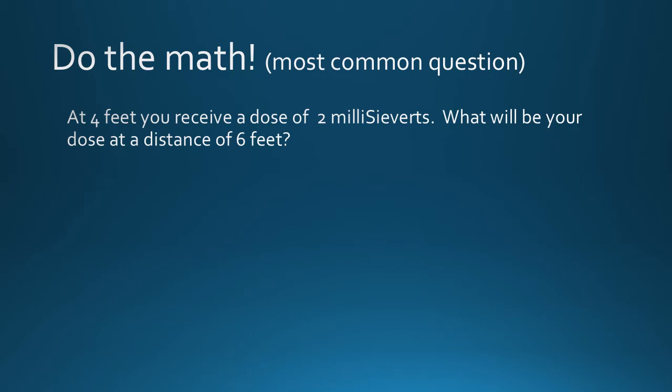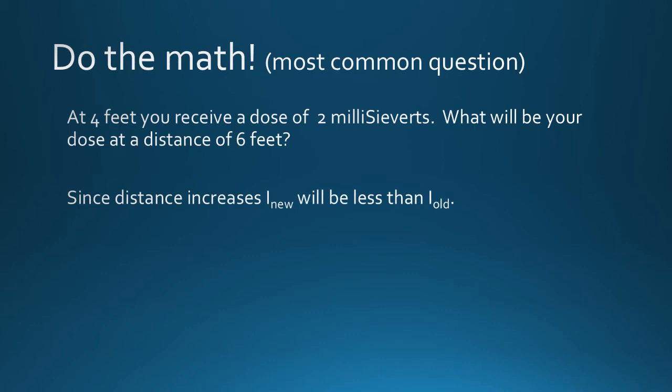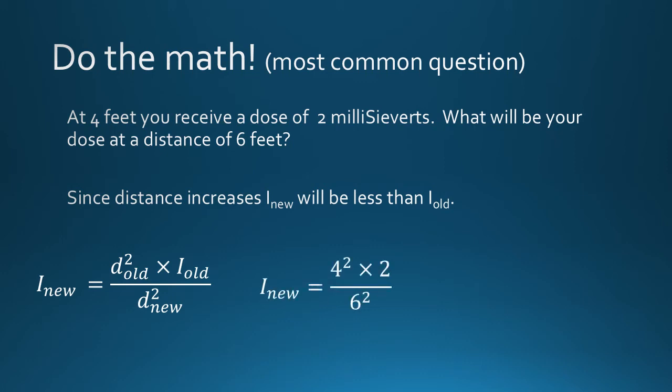Here is a question that involves radiation dose. The word dose is used in the question and the units are expressed in millisieverts, which are units of dose. So we will use the first form of the inverse square law equation, which includes inverse relationships for the new and old elements. Since the distance increases, you can immediately determine that your answer will be less than two millisieverts, because the dose decreases as the distance increases — an inverse relationship. The equation solves for the new dose, and the answer is 0.88 millisieverts, which is less than the two millisieverts with which we started.